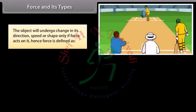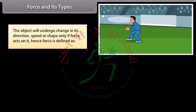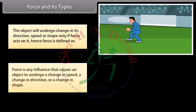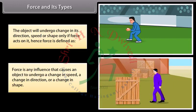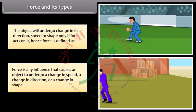The object will undergo change in its direction, speed or shape only if force acts on it. Hence, force is defined as: Force is any influence that causes an object to undergo a change in speed, a change in direction, or a change in shape.